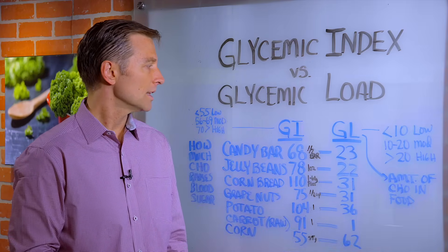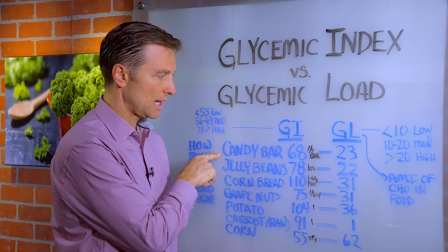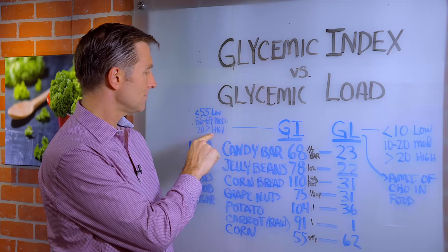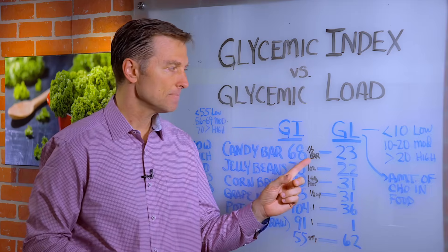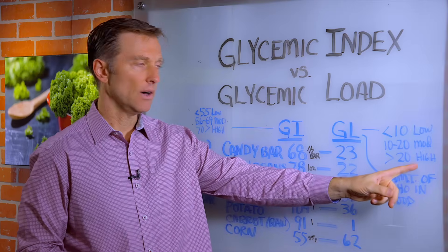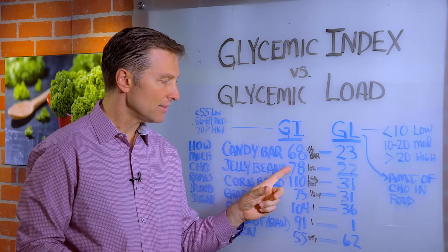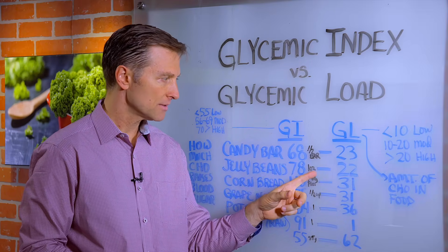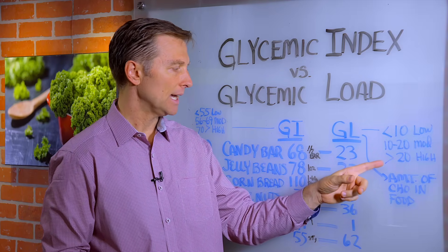A typical candy bar is 68 on the glycemic index — borderline and pretty high — and that's for half a candy bar. The glycemic load is 23, so it's still high. Jelly beans are 78 for a one-ounce amount, with a glycemic load of 22 — again, high.